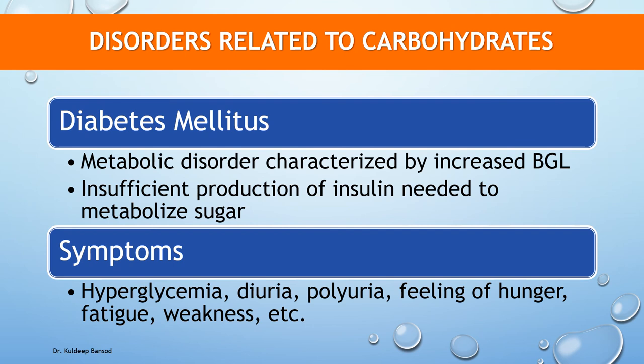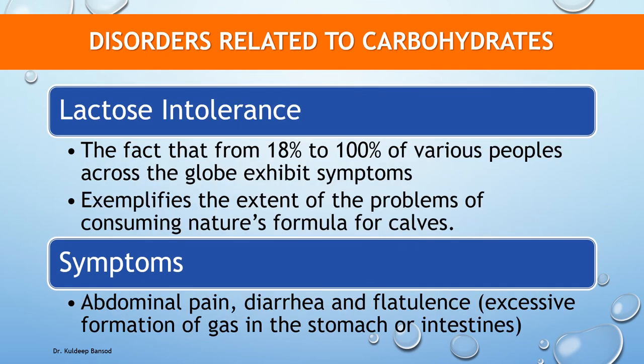Opposite to this, hypoglycemia is another disorder related to carbohydrates. When the blood glucose level falls below 90 mg per deciliter, a person suffers from hypoglycemia. Lactose intolerance is another disorder; from 18% to 100% of various populations across the globe exhibit symptoms. Larger numbers of people experience symptoms such as abdominal pain, diarrhea, and flatulence — flatulence being excessive formation of gas in the stomach or intestine.